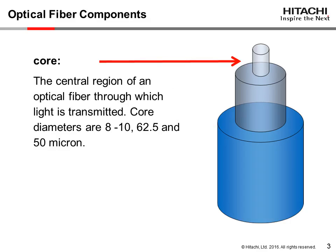An optical fiber is comprised of three components: core, cladding, and acrylate coating. The first component is the core, the center region of the optical fiber through which light is transmitted. Standard industry core sizes are 8 to 10 micron, 62.5 micron, and 50 micron.